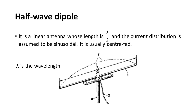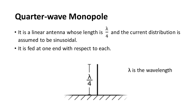The fourth one is the half wave dipole. It is a linear antenna whose length is lambda by 2, and the current distribution is assumed to be sinusoidal. It is usually center fed.